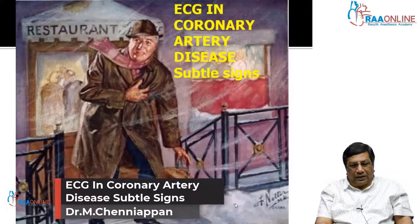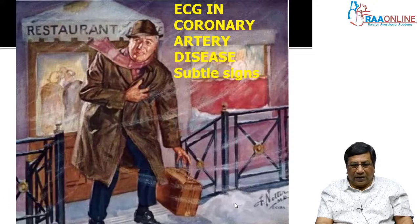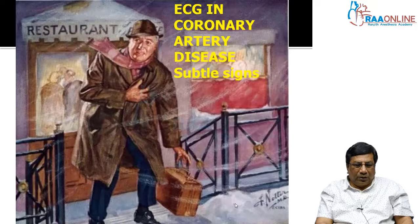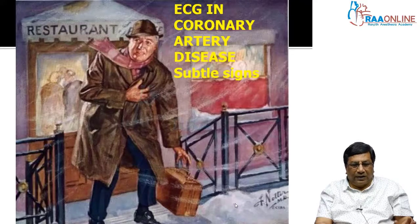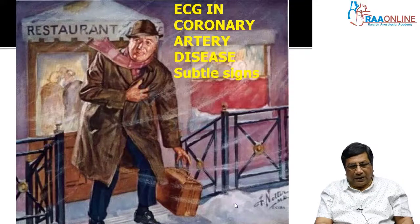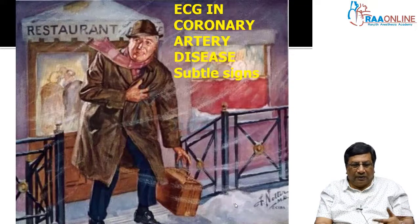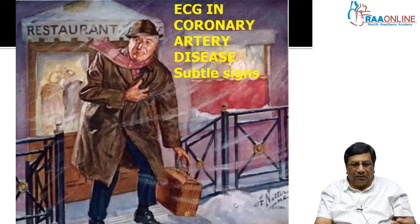In the ECG in coronary artery disease, we are now going to see the subtle signs of coronary artery disease, because textbooks will describe the classical signs. It is easy to diagnose coronary artery disease when classical signs like ST depression, ST elevation, or classical T wave inversions are present. But many times those changes may not be there in the patient, and very subtle signs will tell you that the patient may have coronary artery disease.